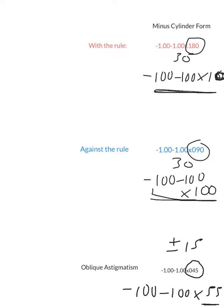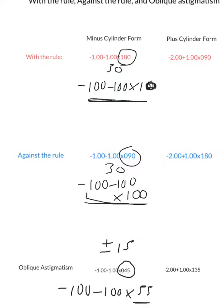For plus cylinder form, it's completely opposite. The ophthalmologists usually write the eyeglass prescription in plus cylinder form, and the optometrists usually write eyeglass prescriptions in minus cylinder form. Keep in mind that plus cylinder form and minus cylinder form represent exactly the same thing — it's just a different way of writing things.